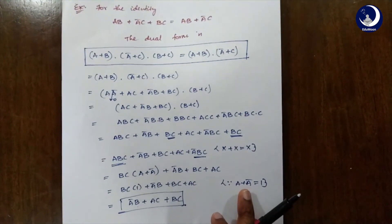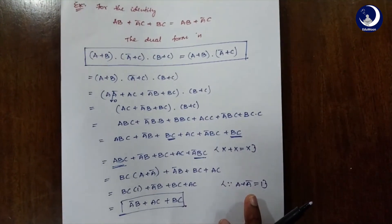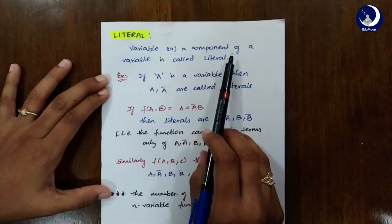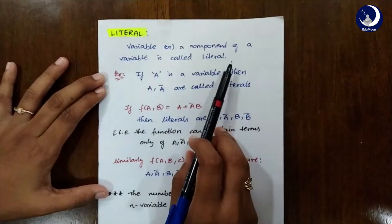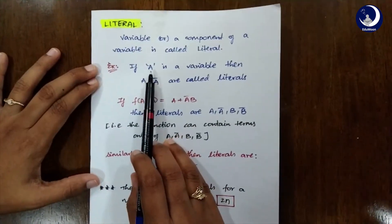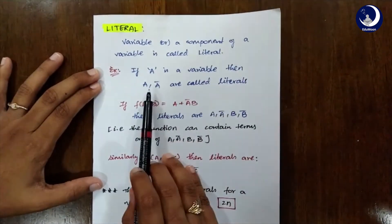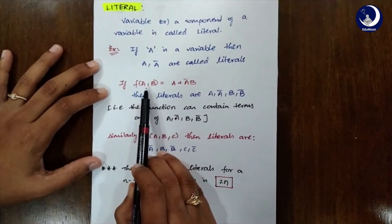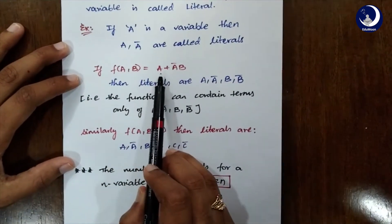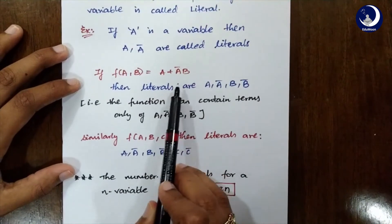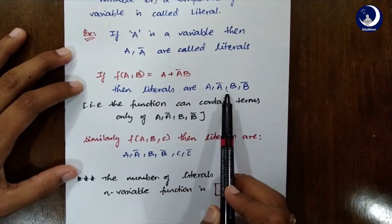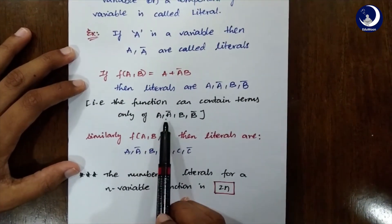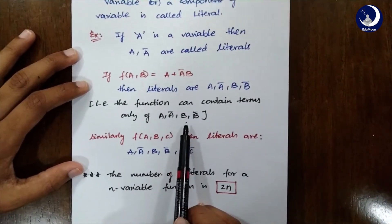Now we are done with the dual of the Boolean expression. Let's see another concept: literals. A variable or a complement of a variable is called a literal. For example, if A is a variable then A and Ā are called literals. Similarly, if a function F(A,B) = A + ĀB, then the literals are A, Ā, B, and B̄ — the function can contain terms only of A, Ā, B, and B̄.